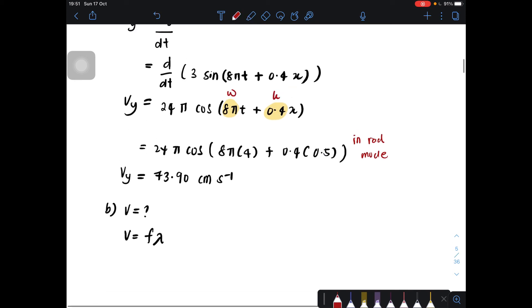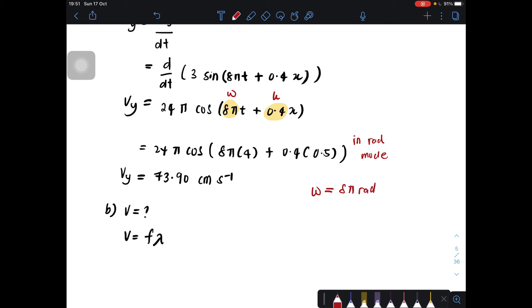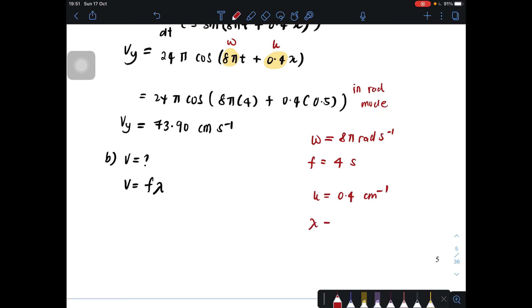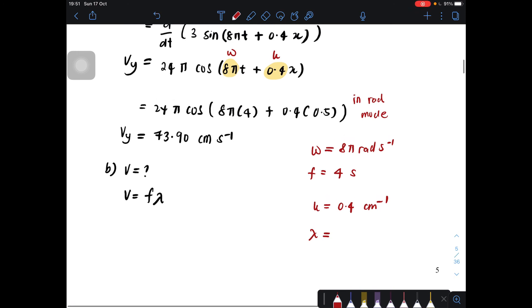So we can get omega equal to 8 pi radian per second. So we will get f equals 4 Hz. And then value for k is 0.4 per centimeter. So we will get lambda is equal to 5 pi cm.